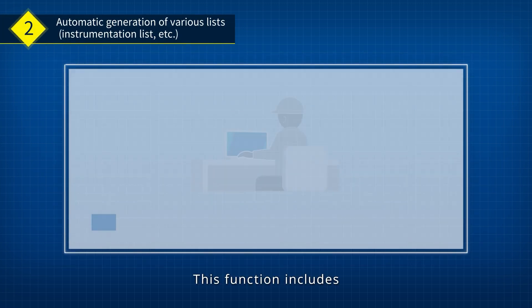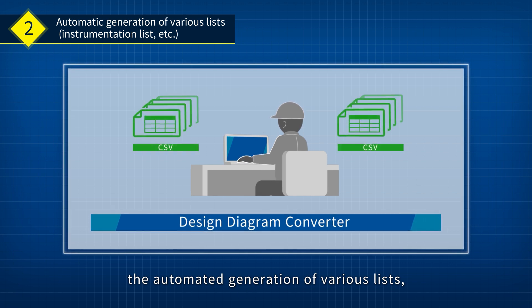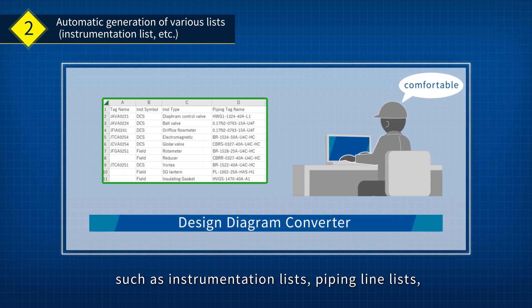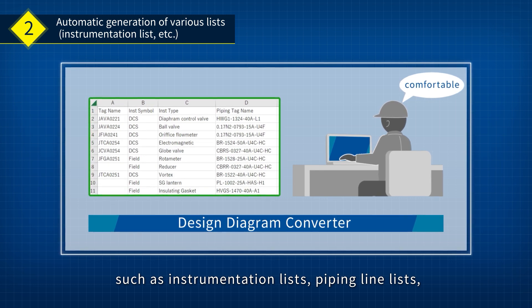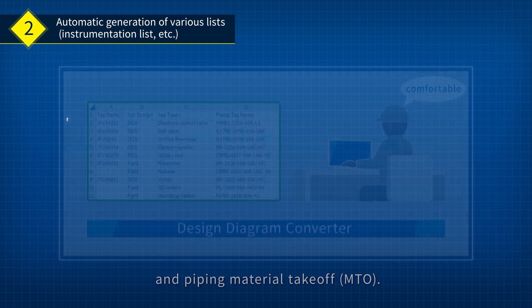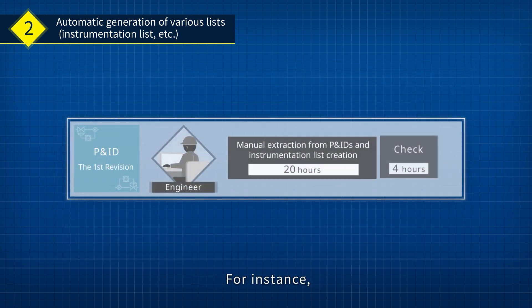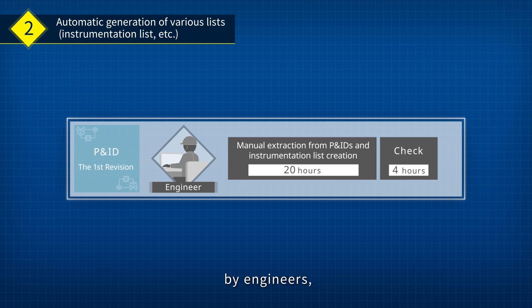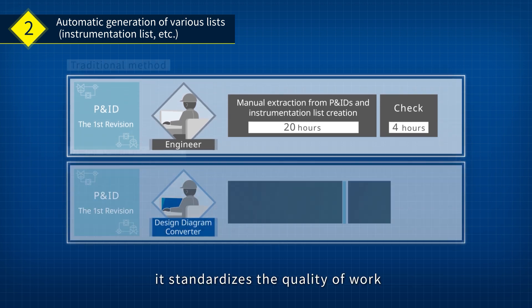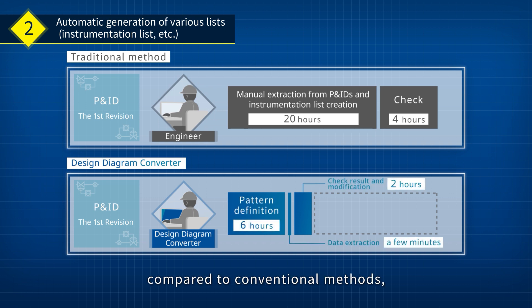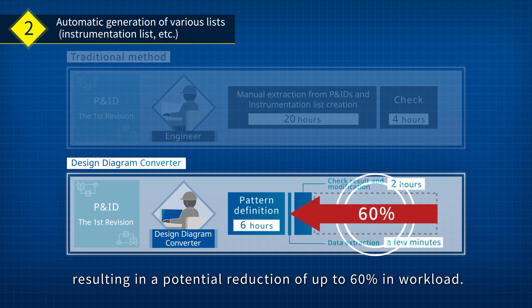This function includes the automated generation of various lists, such as Instrumentation Lists, Piping Line Lists, and Piping Material Takeoff. For instance, in the case of manually created Instrumentation Lists by engineers, it standardizes the quality of work compared to conventional methods, resulting in a potential reduction of up to 60% in workload.